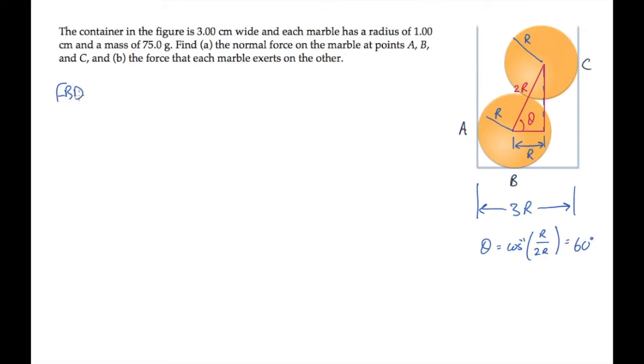Now let's draw two free body diagrams and apply the conditions of equilibrium to solve parts A and B. First, a free body diagram for both marbles, and then one for just the top marble. The forces acting on the system of two marbles are the normal forces at A, B, and C, and the two weights which act at the centers of mass, the center of each marble.